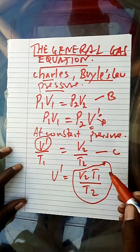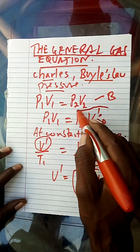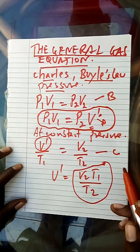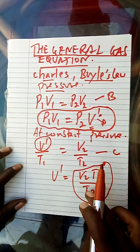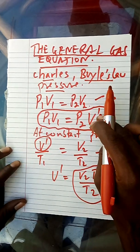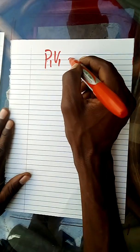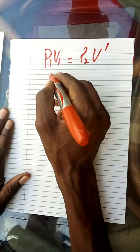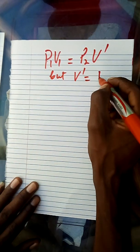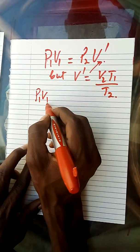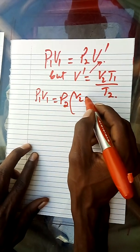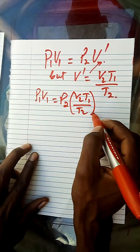Now, substituting this value — the value of V-dash is equal to V2 T1 over T2 — into Boyle's law equation: if P1 V1 is equal to P2 times V-dash, and we have said V-dash is equal to V2 T1 over T2, then once we substitute up here, we have P1 V1 is equal to P2 times V2 T1 over T2.